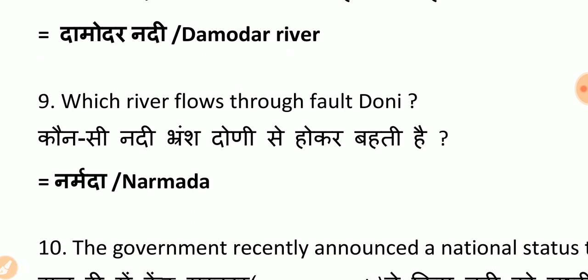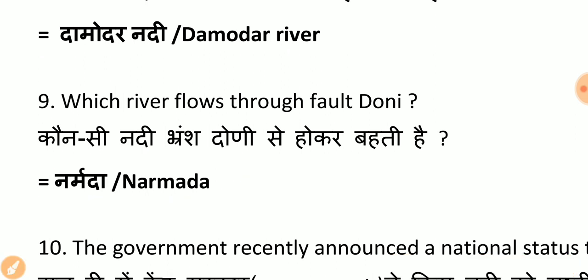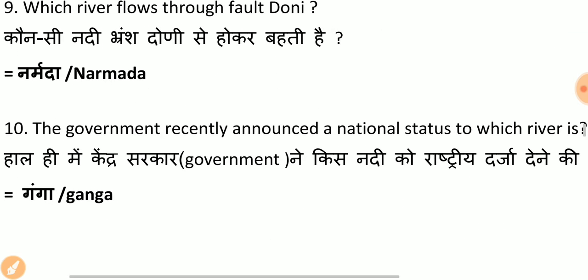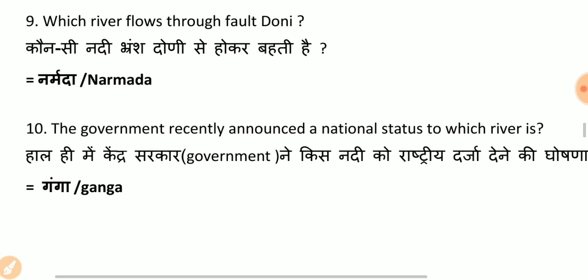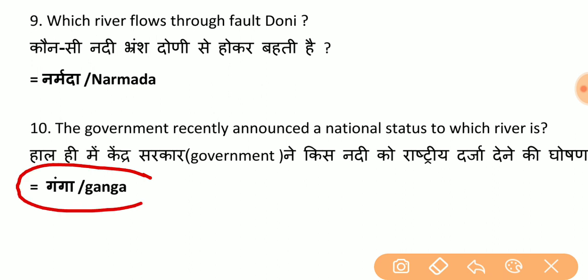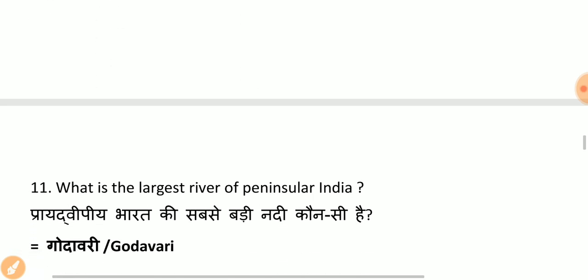Which river flows through a fault/rift valley? The correct answer is Narmada river. Also remember: Ganga — the central government recently announced giving Ganga the status of National River.